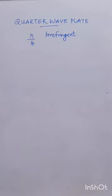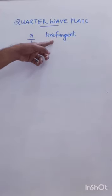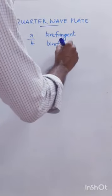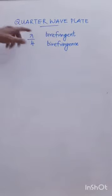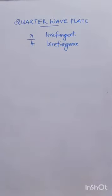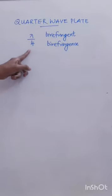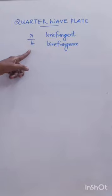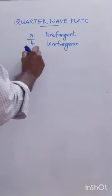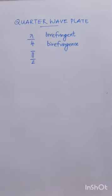A birefringent crystal is a crystal which splits a ray into two. Calcite and a Nicol prism split a ray into two, and all these come under the category of birefringent crystals. A quarter wave plate splits the incident polarized beam into two — an E ray and an O ray — and introduces a path difference of lambda/4 between the two beams. A path difference of lambda/4 corresponds to a phase difference of pi/2.